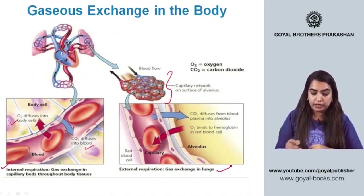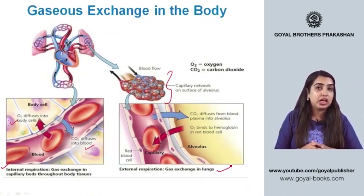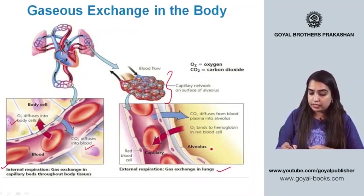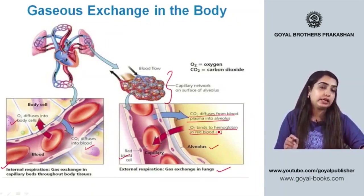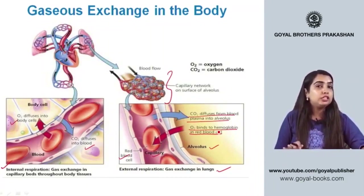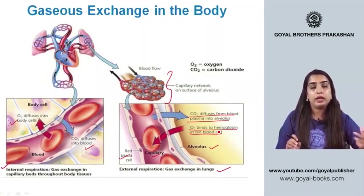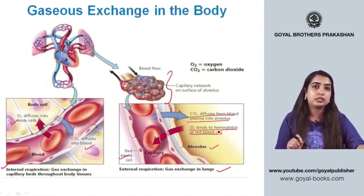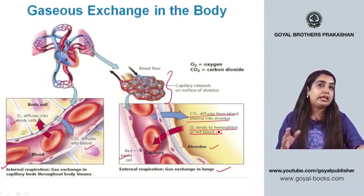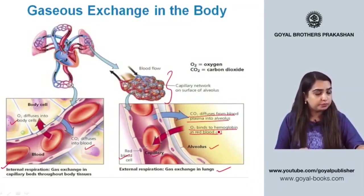A second picture shows external respiration — gas exchange in the lungs. Here, CO2 diffuses from blood plasma into the alveolus, and O2 binds to hemoglobin in red blood cells, forming oxyhemoglobin. This picture explains the formation of oxyhemoglobin and carbaminohemoglobin, and the exchange of O2 and CO2 during inhalation and exhalation.